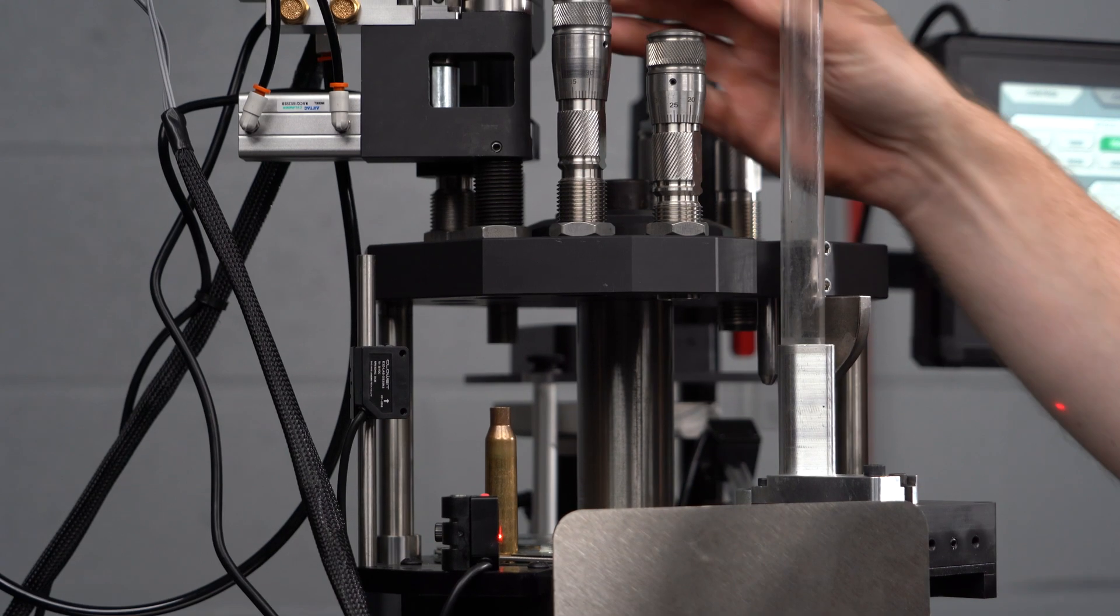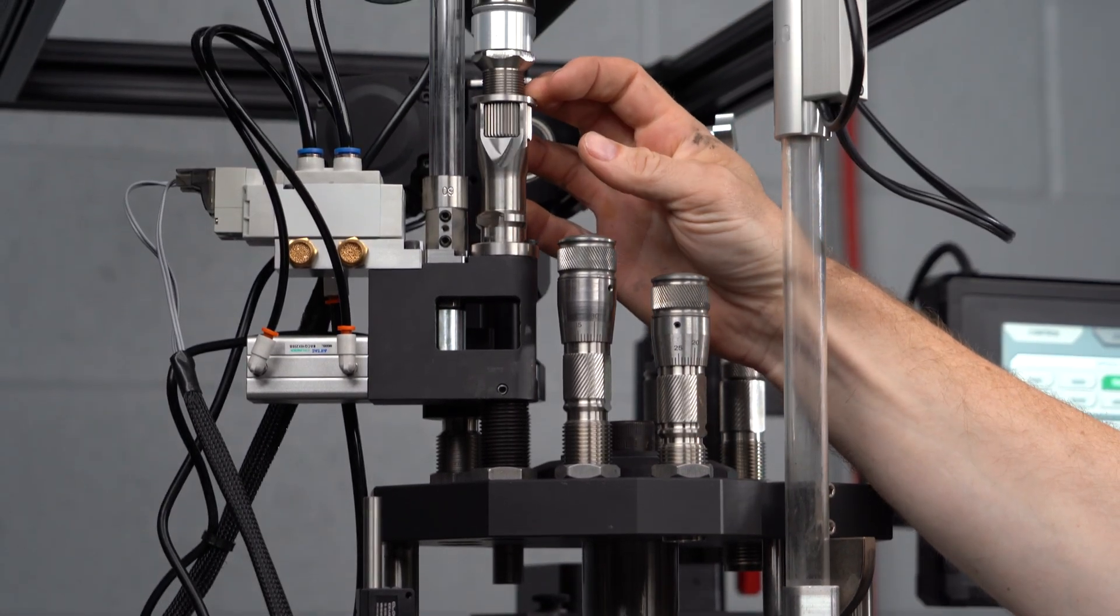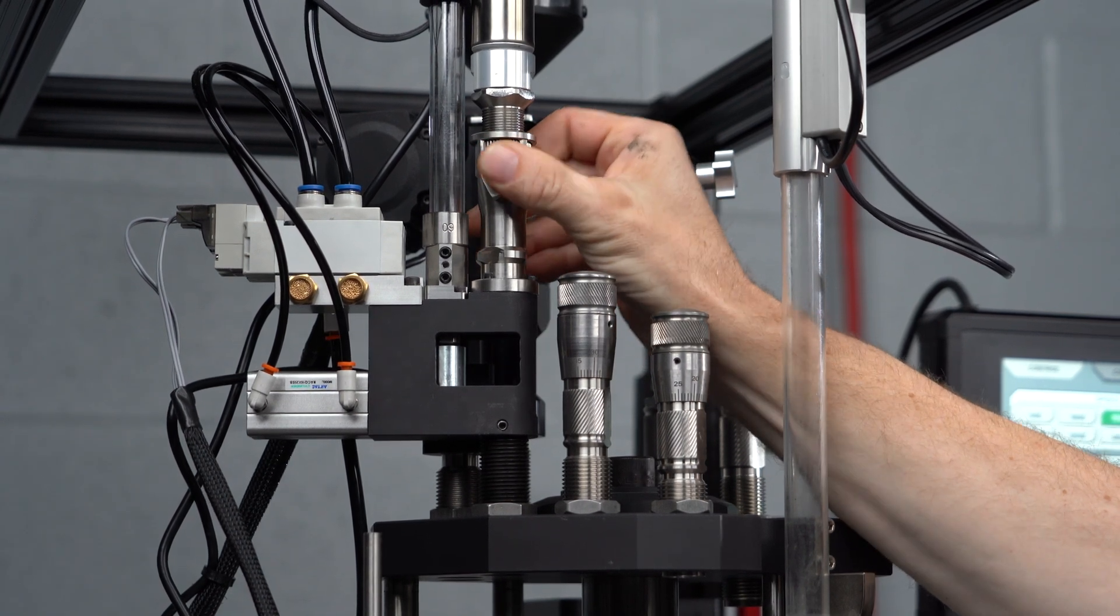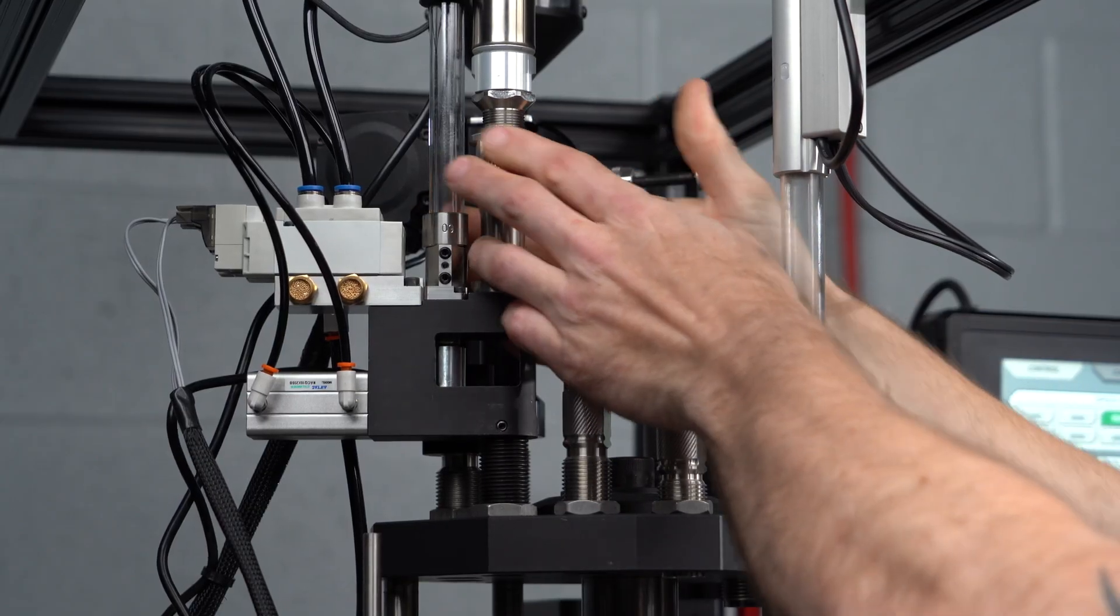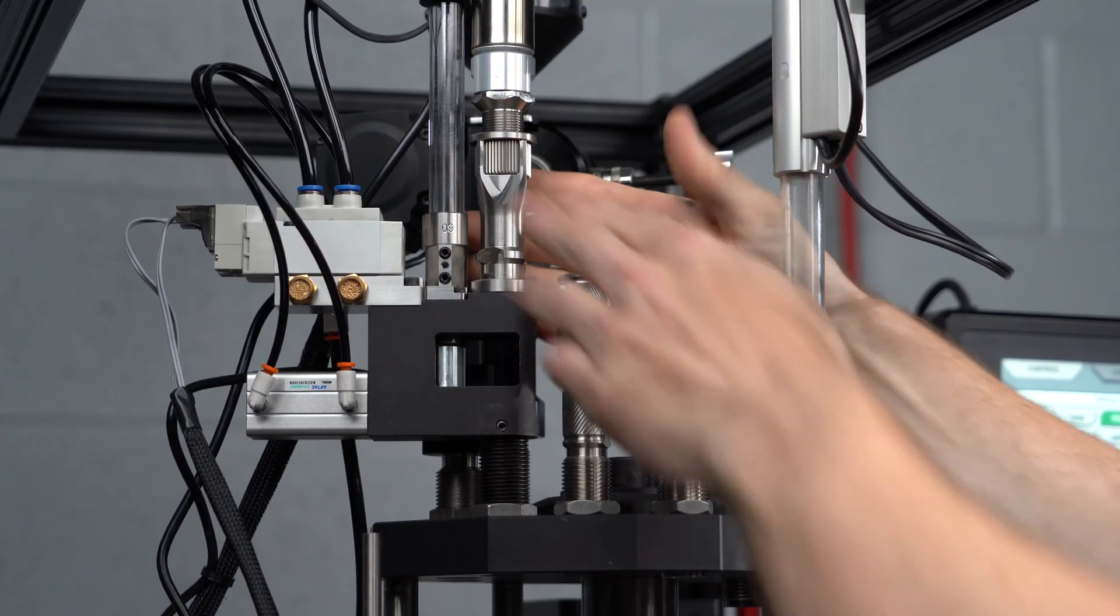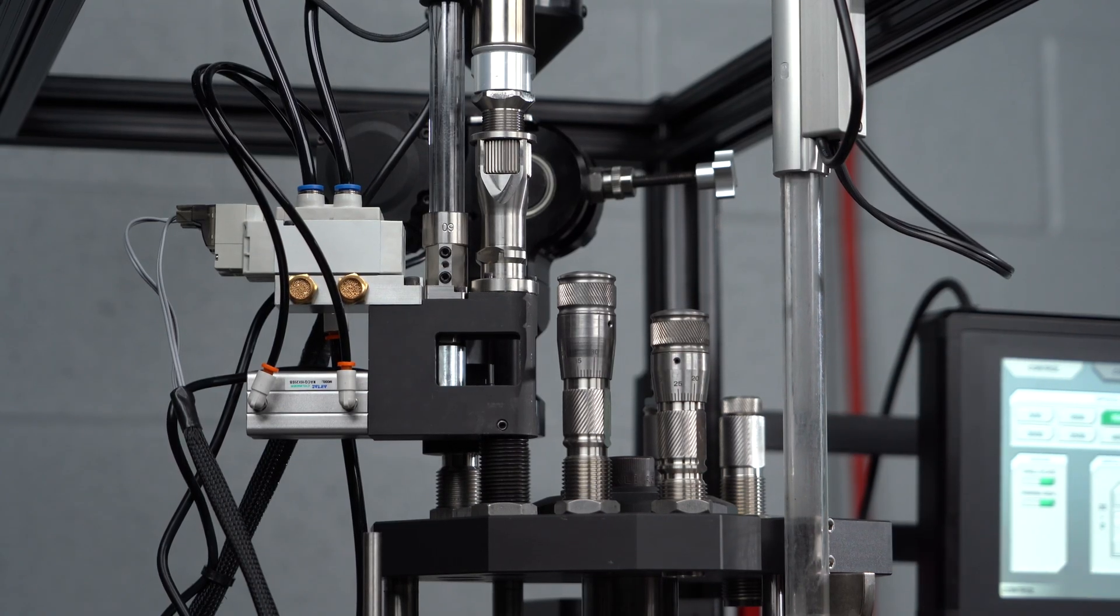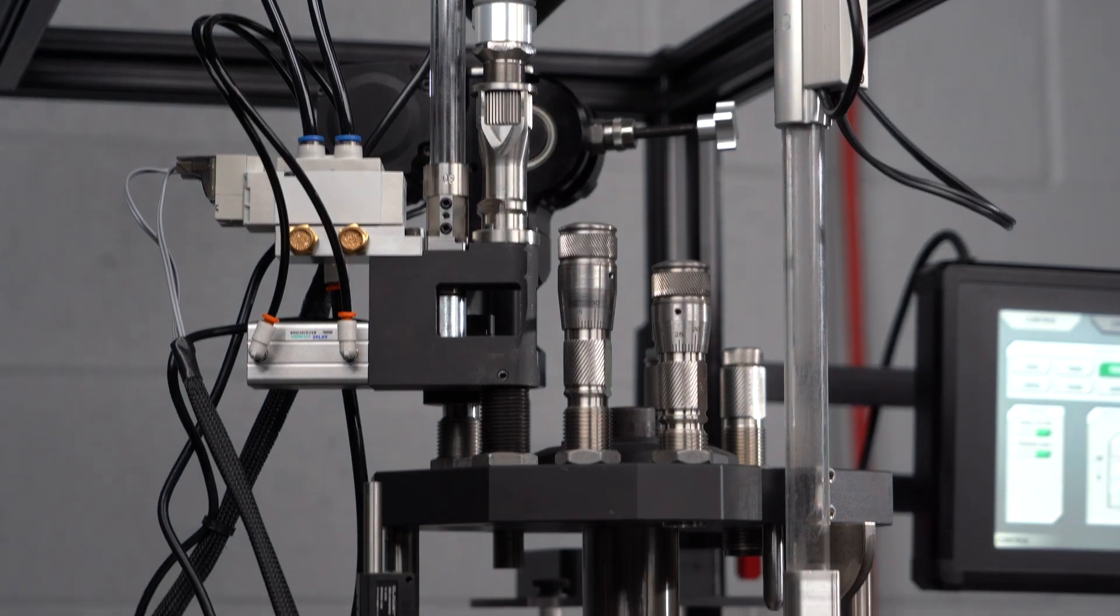Let's go ahead and make an adjustment to our seat rod and seating depth so we can get that projectile seated a little bit deeper. We're going to adjust our seat rod solenoid so that we lower it a little bit more. There we go. We've got projectile loaded. Case proximity sensor is working. We'll just do a single cycle and see where we end up.